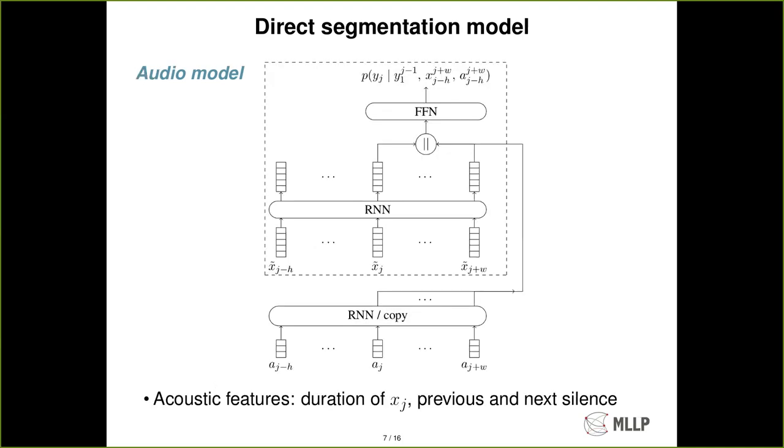Here we have the text model inside a dashed line and then we can add audio information. So we provide the model with acoustic features. These acoustic features can be either passed through an RNN and then the internal states can be concatenated or they can be just concatenated directly with the text states and fed to the feed forward. These acoustic features are the duration of the xj word, the duration of the previous silence to the xj word and the duration of the next silence phoneme after word j.